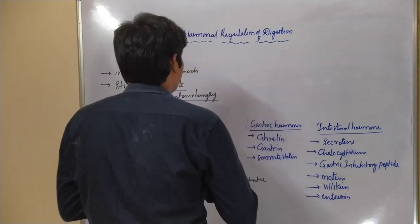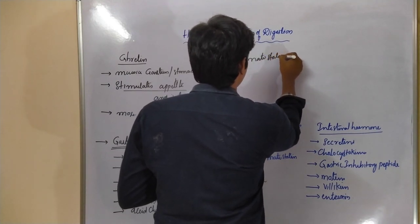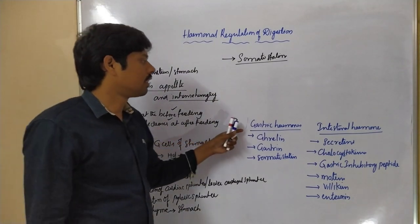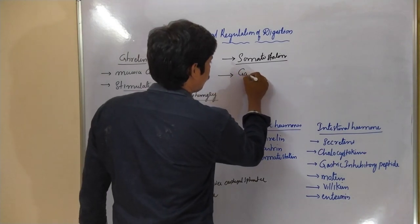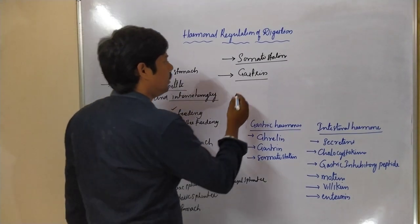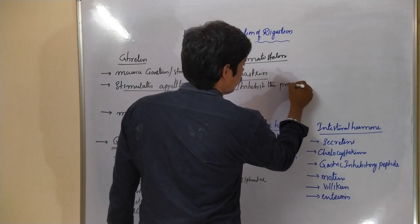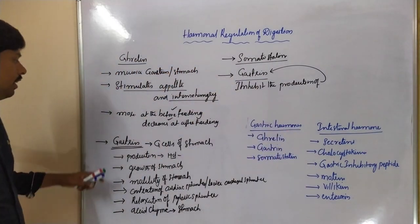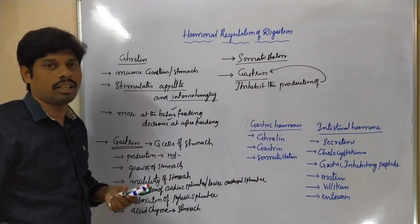Coming to the third hormone, somatostatin. This is also produced by the gastric region. Somatostatin acts on gastrin and inhibits the production of gastrin. So ghrelin, gastrin, and somatostatin are the three hormones produced by the gastric region.